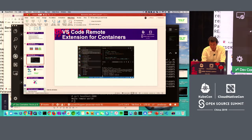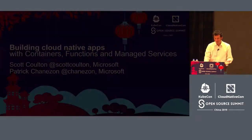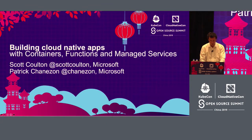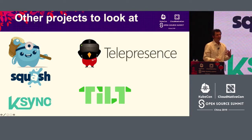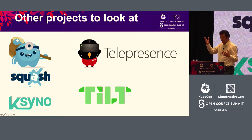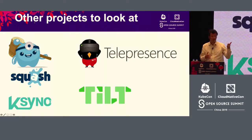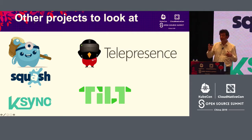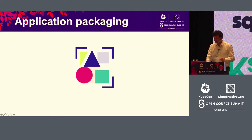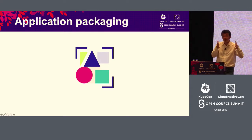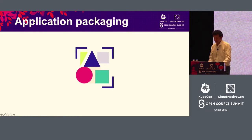So that's the VS Code Remote extension. When you want to debug functions or containers in a Kubernetes cluster, there are also other projects worth looking at: Squash from the Glue team, TelePresence which is a CNCF project, K-Sync, and Tilt, which is pretty recent. My DockerCon slides have explanations on how to use all of them. That covers the developer experience — now Scott is going to talk about application packaging: how do you package applications that have containers, functions, and managed cloud services?